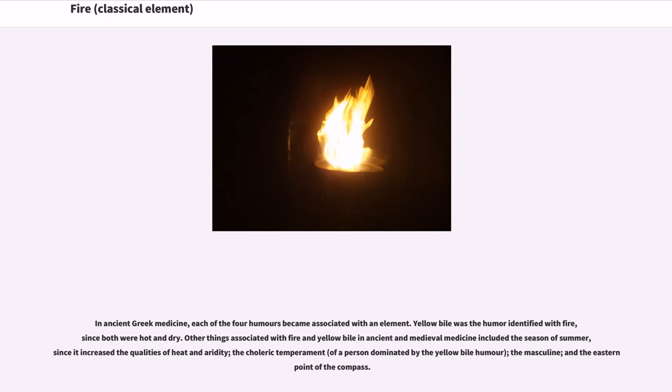In ancient Greek medicine, each of the four humors became associated with an element. Yellow bile was the humor identified with fire, since both were hot and dry. Other things associated with fire and yellow bile in ancient and medieval medicine included the season of summer, since it increased the qualities of heat and aridity, the choleric temperament of a person dominated by the yellow bile humor, the masculine, and the eastern point of the compass.